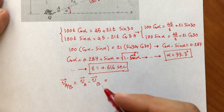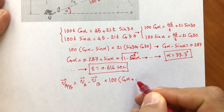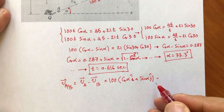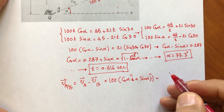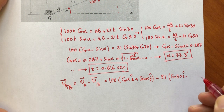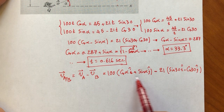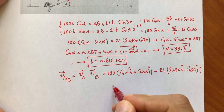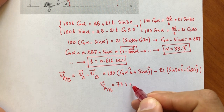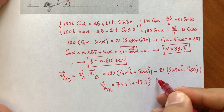Velocity of A = 100(cosine(alpha) i + sine(alpha) j). Velocity of B has magnitude 21, with direction sine(30) in the i-direction and negative cosine(30) in the j-direction. Subtracting these vectors gives the relative velocity of A with respect to B equal to 73.1 i + 73.1 j feet per second.